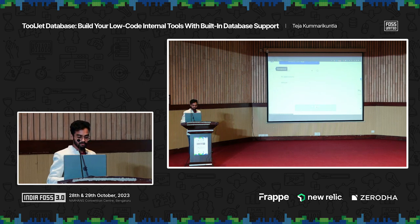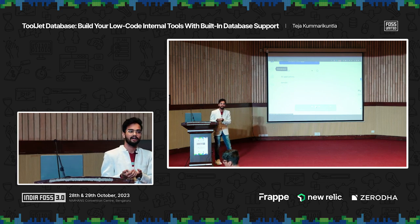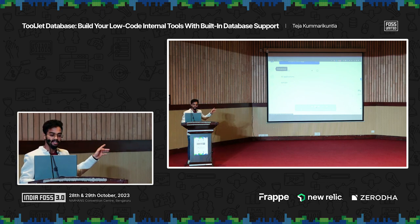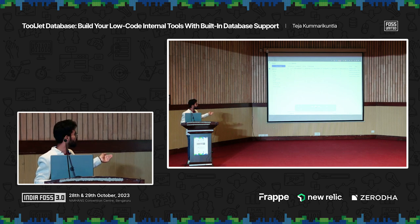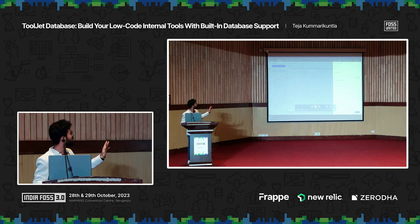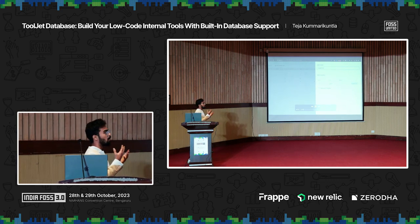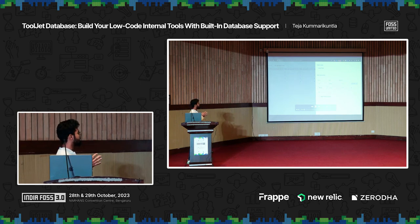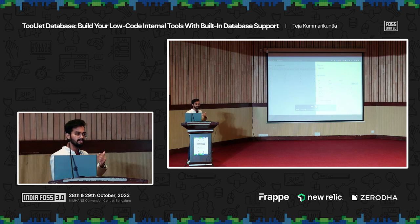Right over there, what you see is how you access ToolJet Database. This is the home screen — once you sign up or self-host ToolJet, you get to this welcome screen where you have the left sidebar with a 'Databases' option. Once you click on that, you're taken to the databases page. On the left side you see the list of tables. You can create a new table quickly — as you click on that, you get options to put your table name and define your columns.